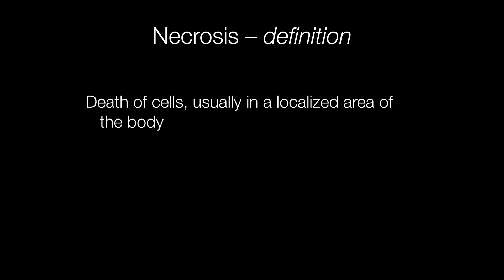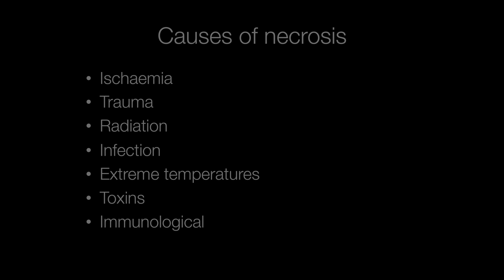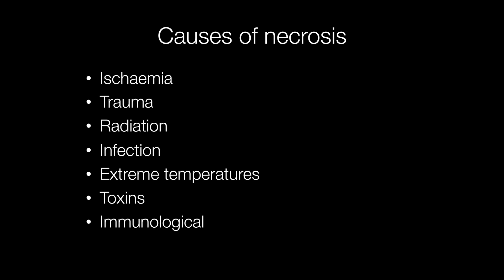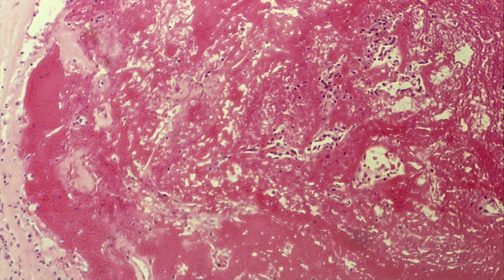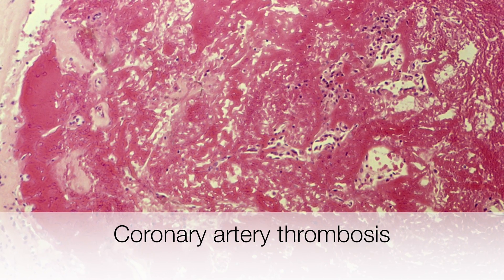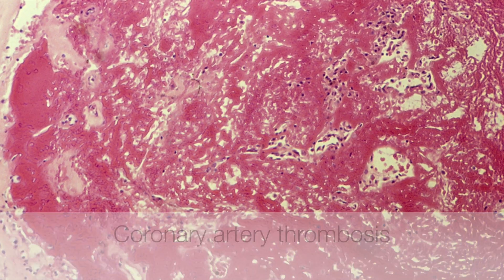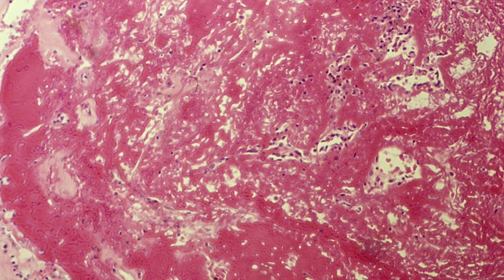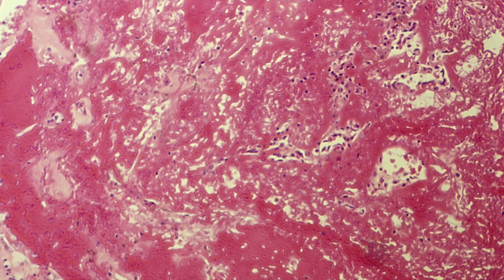A simple definition of necrosis is death of cells, usually in a localised area of the body. There are many things that will cause necrosis. These can be categorised as ischemia, trauma, radiation, infections, extreme temperatures, toxins, and immunological conditions. This is a picture of a coronary artery blocked by a thrombus, and this will cause ischemia of the tissue it is supplying, with eventual necrosis.